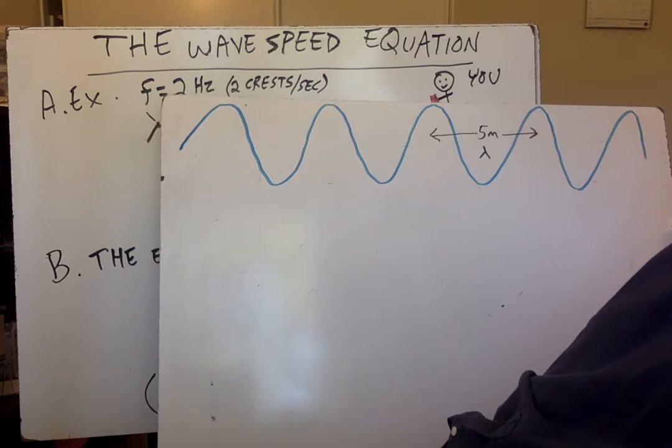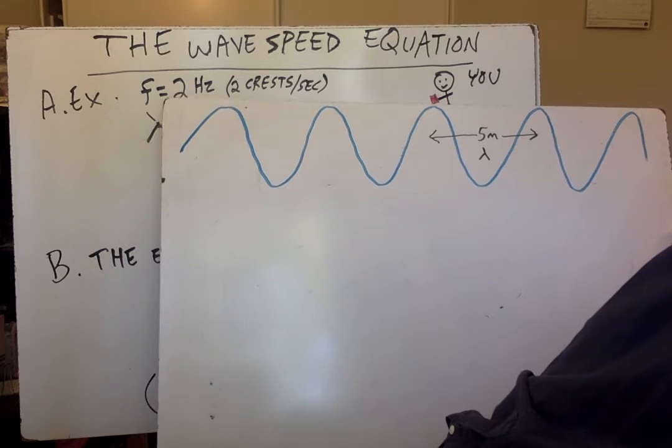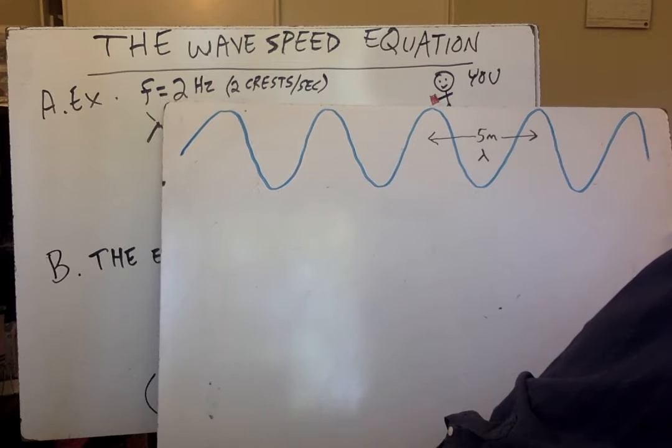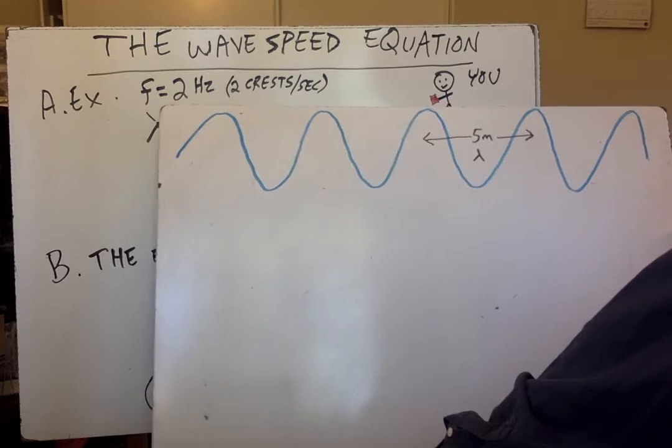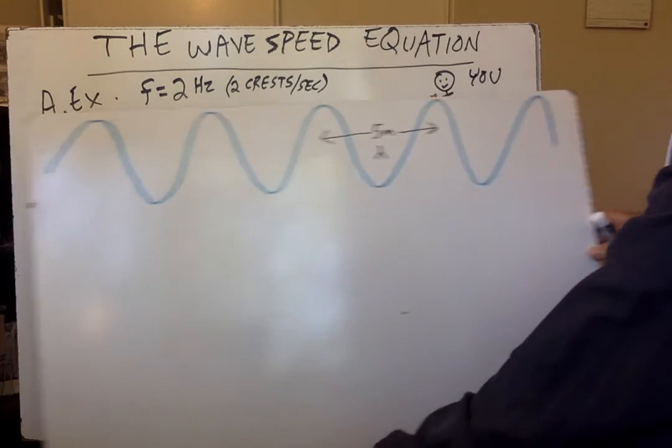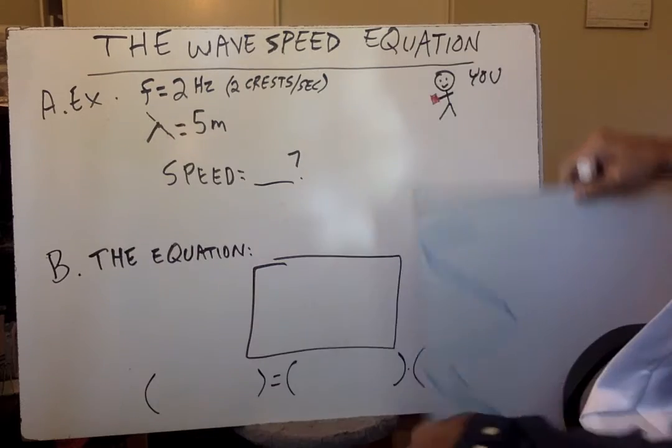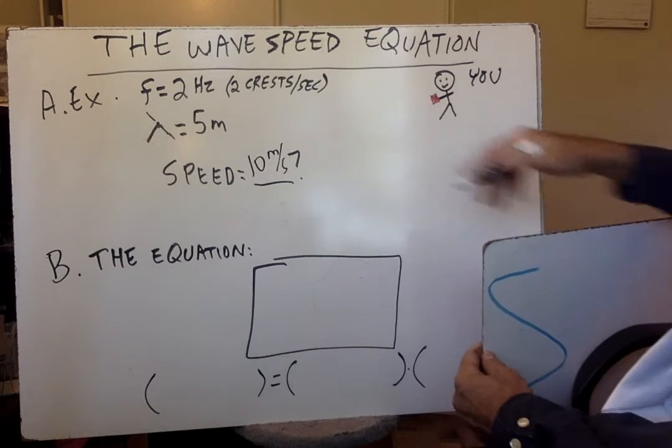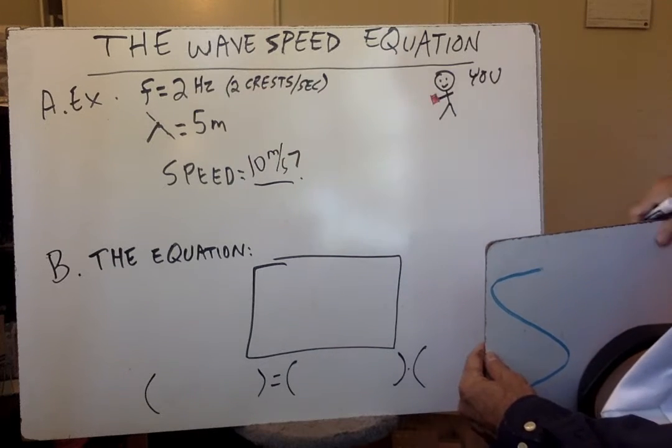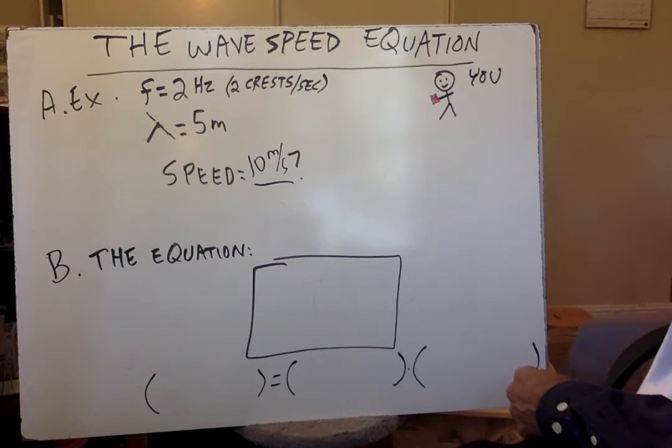So what's the total distance that went under you in those two seconds? And how far is it between crests? It's 5 meters. So the total distance that went under you is 10 meters. And that happens, two crests per second means 10 meters passed under you per second. So the answer is 10 meters per second. So how do you get to 10 from these two numbers? And the answer is that you multiply.